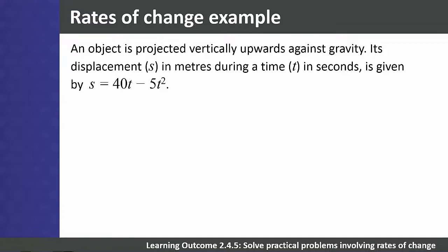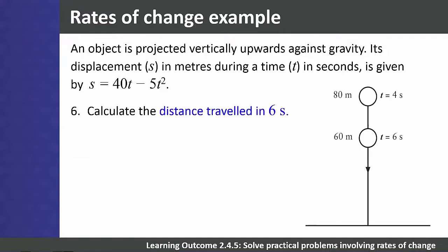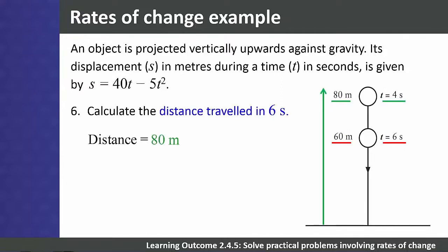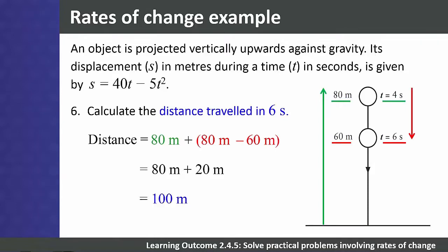Question 6: calculate the distance travelled in 6 seconds. It takes 4 seconds to reach a maximum height of 80 meters, and after 6 seconds the height is 60 meters. The total distance is 80 meters up plus 20 meters down, giving 100 meters travelled in total in 6 seconds.